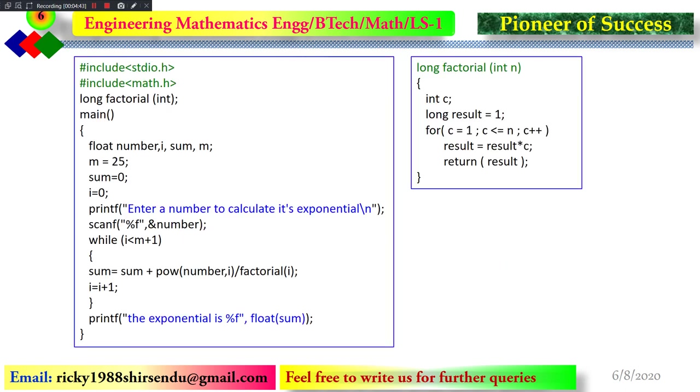I will show you the code. This is the code. We have taken two header files. Those header files will be required because we have taken a function pow, that is power. Because of this calculation, math dot h is required and this is the function by which we are calculating.